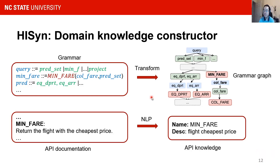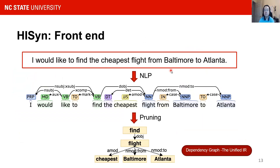Before the synthesis process starts, the domain knowledge constructor builds the knowledge base offline. First, it transfers the grammar into a grammar graph. The elements in the grammar — such as non-terminals, terminals, and production rules — all have their corresponding node types. The knowledge constructor then converts the API documentation into an API knowledge base by using NLP to extract key information from the descriptions. When receiving the user query, the front-end uses natural language processing to parse the original sentence.